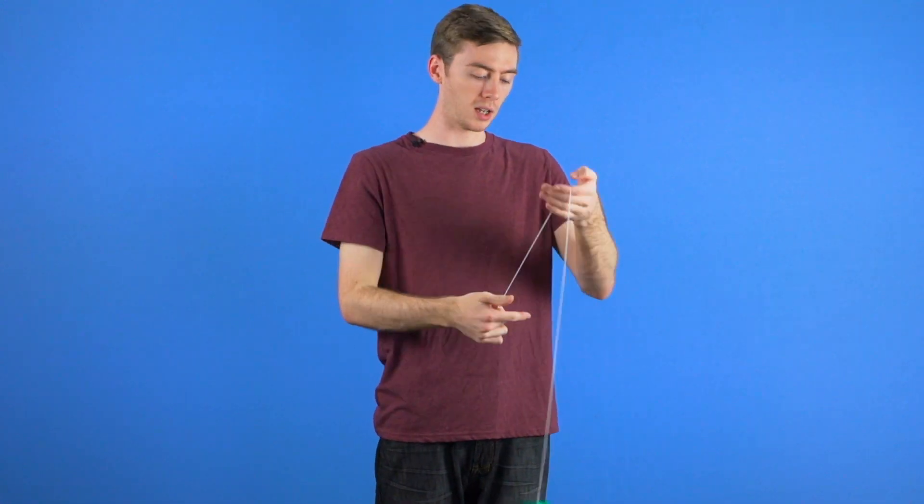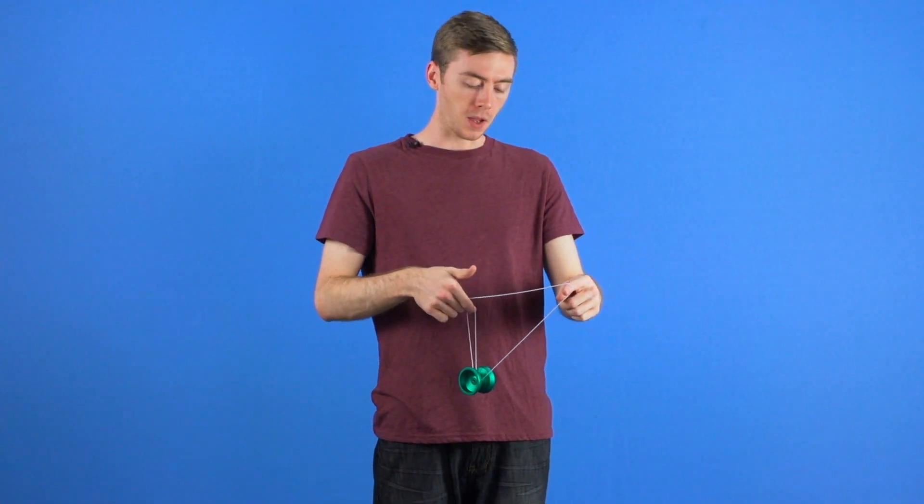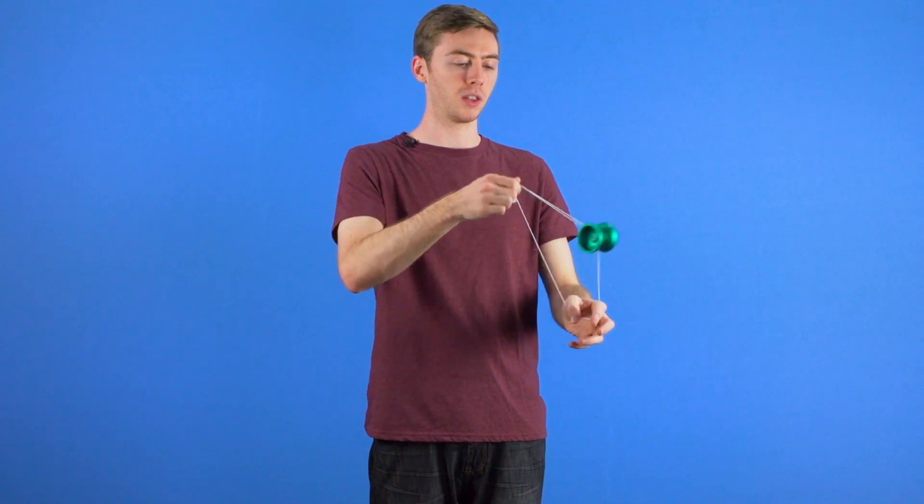Another useful transition to get out of split bottom mount, back into split bottom mount using boingy boing, looks like this.